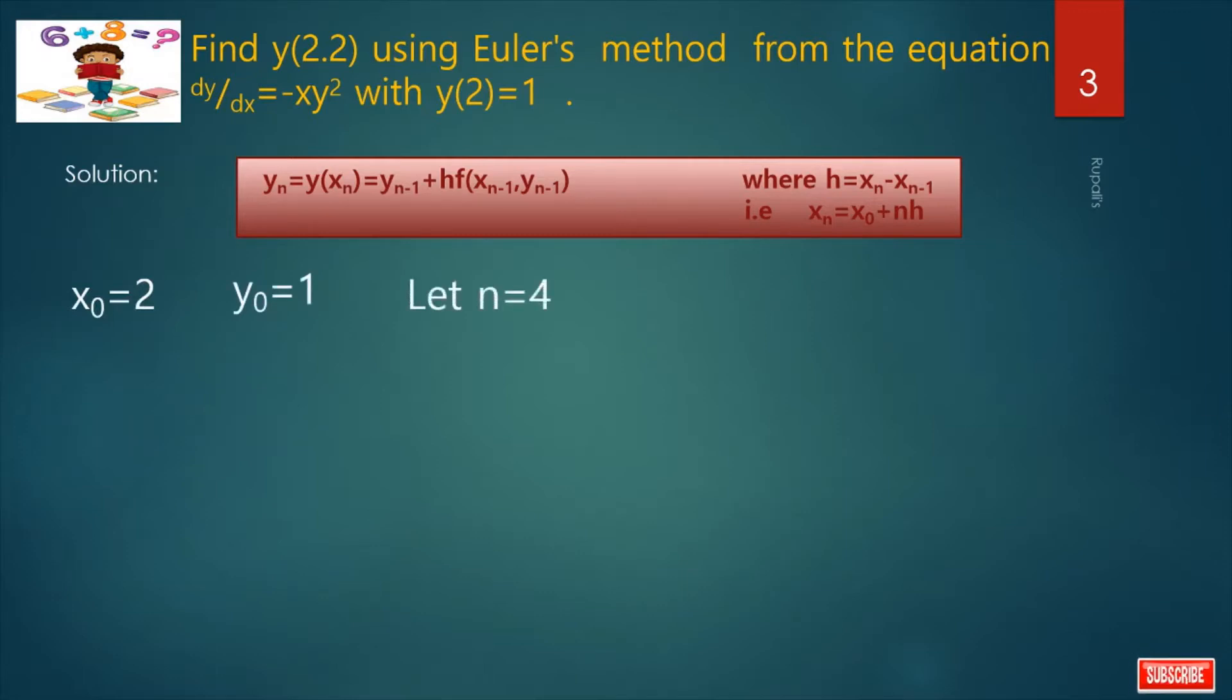Let n equals to 4. Let h equals to, what is h? h is 2.2 minus 2 divided by 4. h is 0.05.